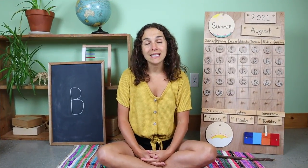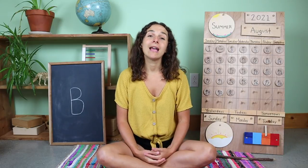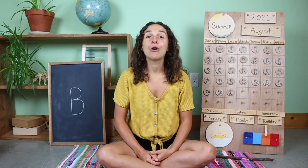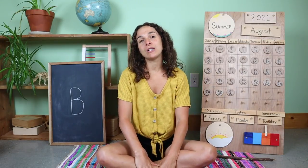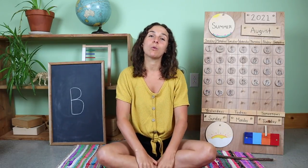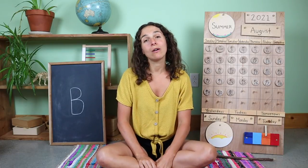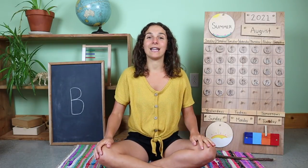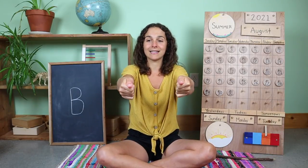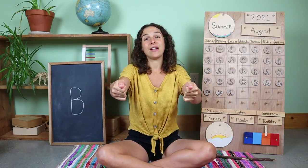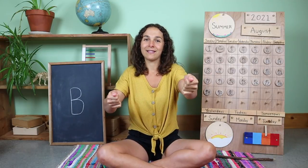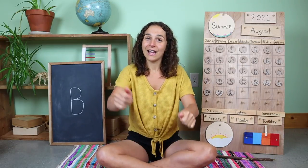We also have a new sign of the week to go over. This week I'm going to show you how to say 'truck' in sign language. Remember, friends, sign language is a language that uses hand gestures and facial expressions to communicate instead of speaking words out loud. In order to say 'truck' in sign language, you're going to take both of your hands and make a fist with the thumb on top, and then slightly move your fists like this. Do you want to try? Truck.